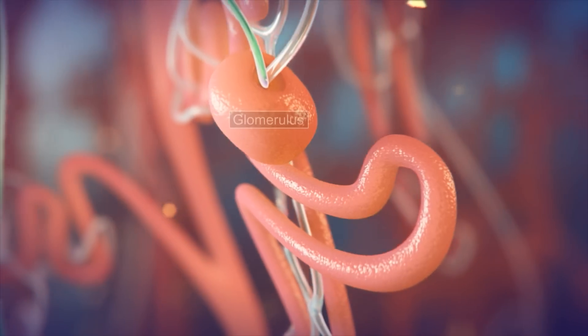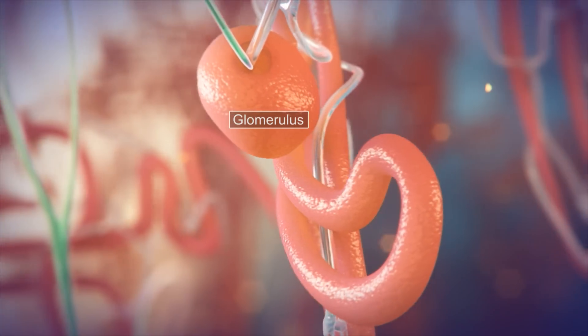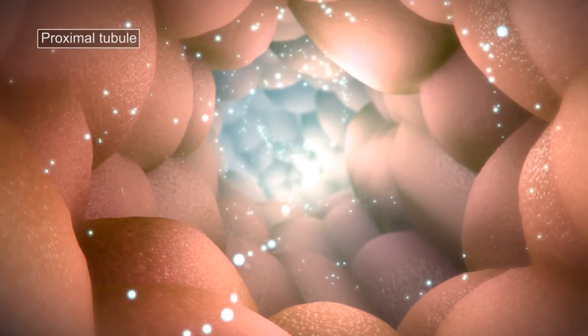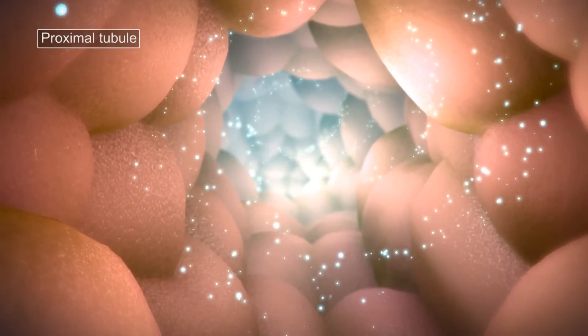Within the kidney, the glomerulus filters the blood. The resulting filtrate passes through the proximal tubule, where over 90% of uric acid is reabsorbed back into the blood.